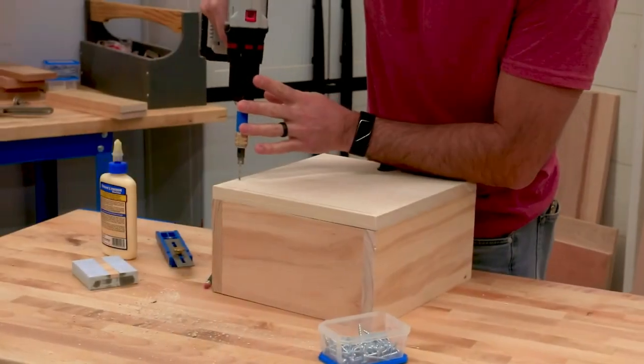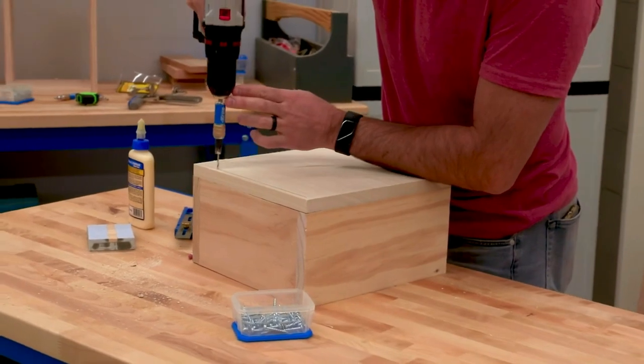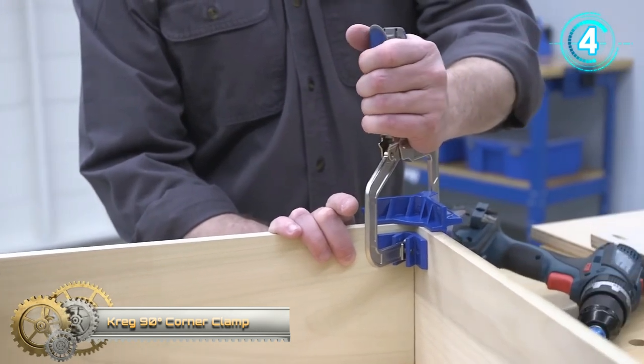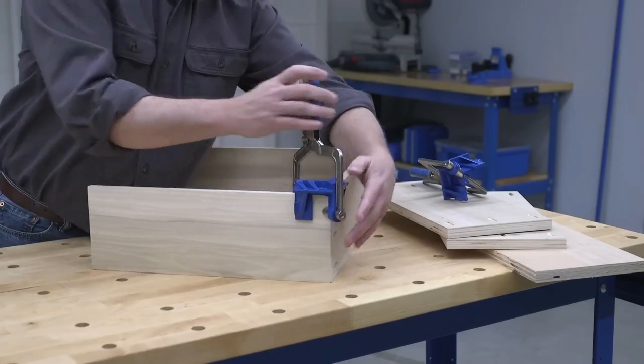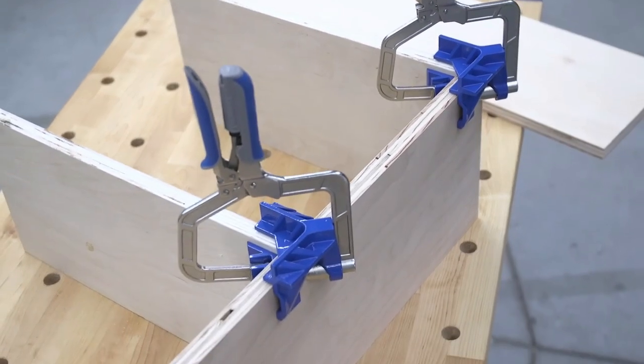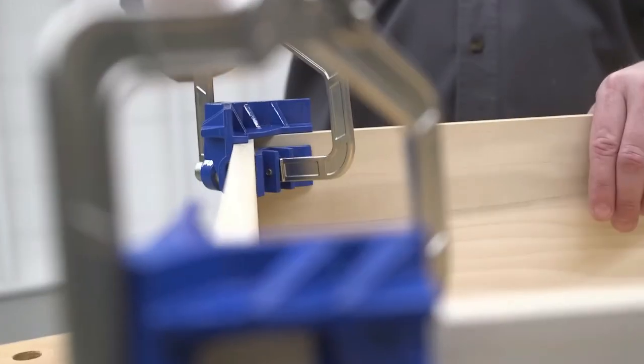The Craig 90 degree corner clamp gives you the helping hand you need to hold 90 degree corners and T-joints together securely when assembling boxes, drawers, cabinets, and cases.